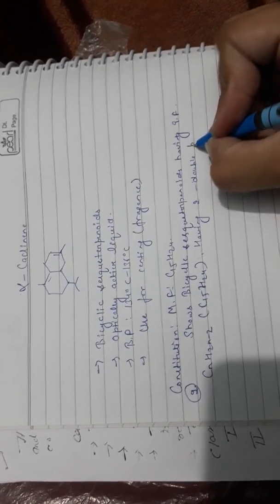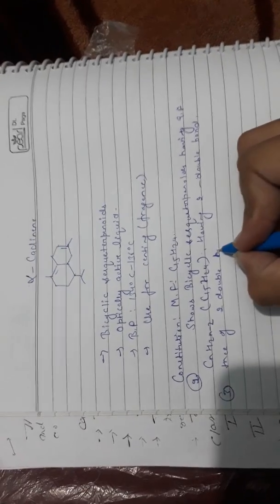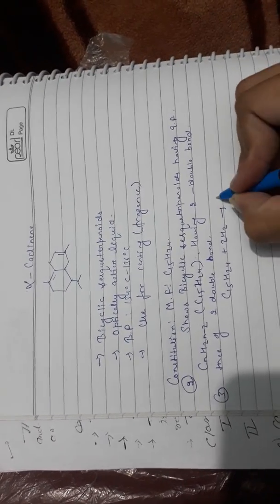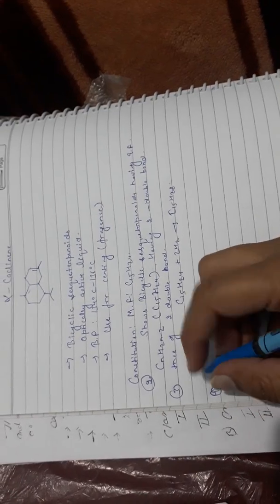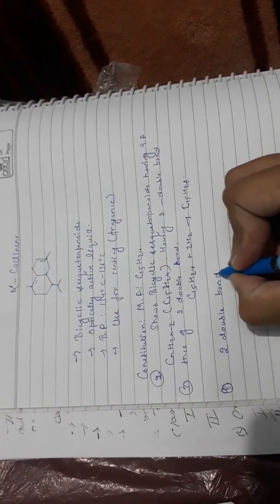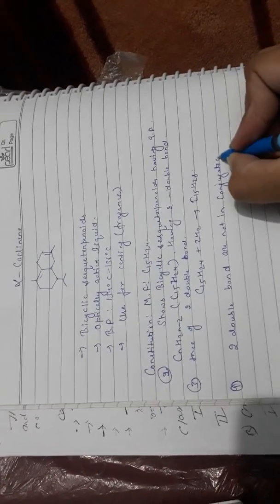Third point, presence of two double bonds is confirmed by this reaction: alpha-cadinene C15H24 plus 2H2. The two double bonds in alpha-cadinene are not in conjugated system. As you can see in the structure, they are not in conjugated manner.